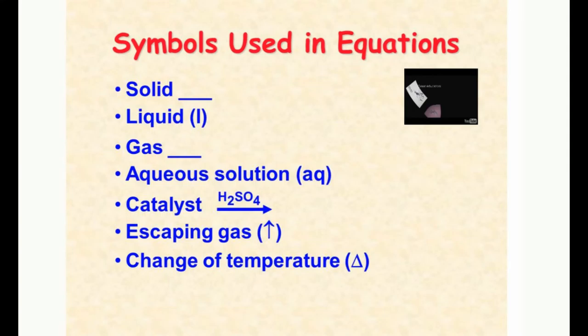Change is going to usually be final minus initial — not initial minus final. It's important to do it in that order so you don't get a negative. If delta appears above the reaction arrow, it means you used heat — you put it up to some fire. That's all it means.